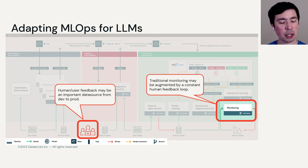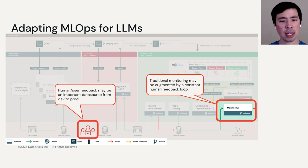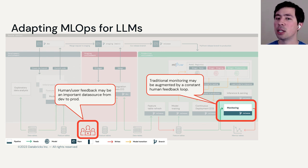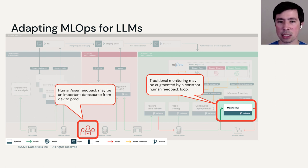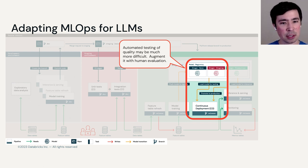Next, we've talked about human feedback being really important for LLMs, and I'll make two comments. In the bottom left, human user feedback should be treated as an important data source, available from development to production. I'm saying data source because you may aggregate this feedback from multiple potential sources, internal and external. On the right, traditional monitoring, which is often fairly automatable, may need to be augmented by a constant human feedback loop, as automated quality testing related to human feedback may be much more difficult.